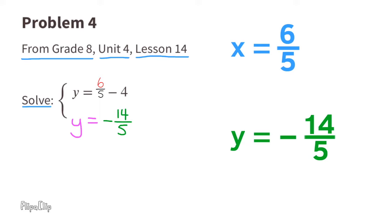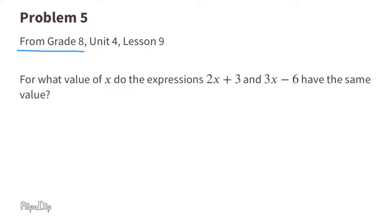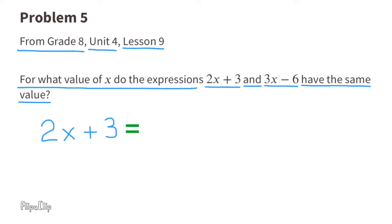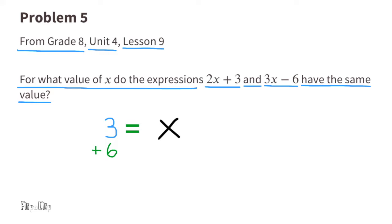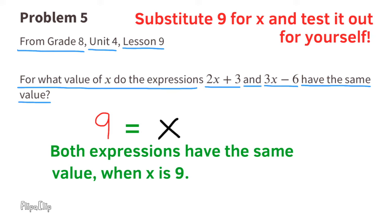Problem number five, from Eighth Grade Unit 4 Lesson 9. For what value of x do the expressions 2x + 3 and 3x − 6 have the same value? Set them equal: 2x + 3 = 3x − 6. Subtract 2x from both sides: 3x − 2x is x. Add 6 to both sides: 3 + 6 = 9. So x = 9. Both expressions have the same value when x is 9. Substitute 9 for x and test it out: 2(9) + 3 and 3(9) − 6.